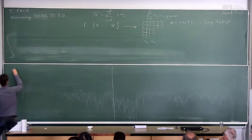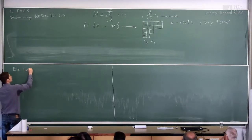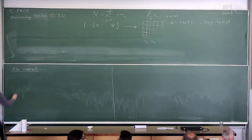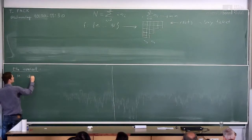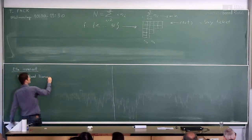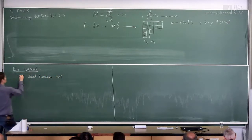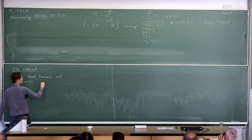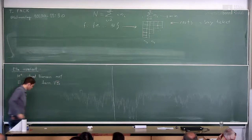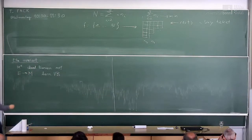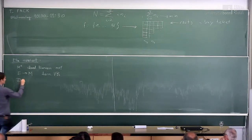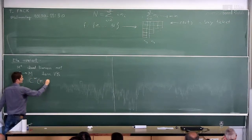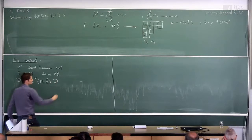Let me explain what the eta invariant is. The setup is very natural geometric global analysis. We start with a closed Riemannian manifold of dimension D, and I have a Hermitian vector bundle over that manifold. From a geometric point of view, and also from a non-commutative geometry point of view, it's very natural to consider Dirac type operators which act on sections of that Hermitian vector bundle.